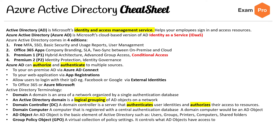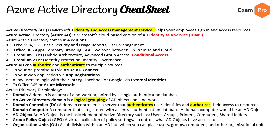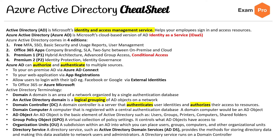A GPO is a virtual collection of policy settings. Organizational units are a subdivision of your AD in which you can place users, groups, computers, etc. And you have directory services, such as Active Directory Domain Services (ADDS), which provides a method of storing directory data and making that data available to network users. A directory service can run on a domain controller.